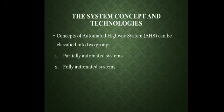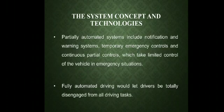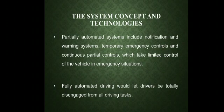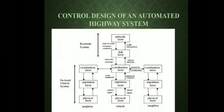Now we will look at the system concept and technologies. There are two types of groups that have been classified. The first is the partial automated system and the second is the fully automated system. The partial automated system includes notification and warning systems, temporary emergency controls, and continuous partial control, which takes limited control of the vehicle in emergency situations. Fully automated driving would let the driver be totally disengaged from all driving tasks. So the partial system is not fully automated — it only operates in emergency situations — whereas the fully automated system handles the entire drive.